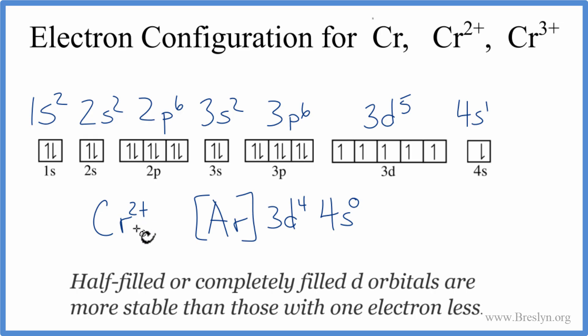If we wanted chromium 3+, we would take one more from the d orbital here. And that's the electron configuration for chromium 3+. This is Dr. B with the electron configuration for Cr, chromium, then Cr2+, and Cr3+. Thanks for watching.